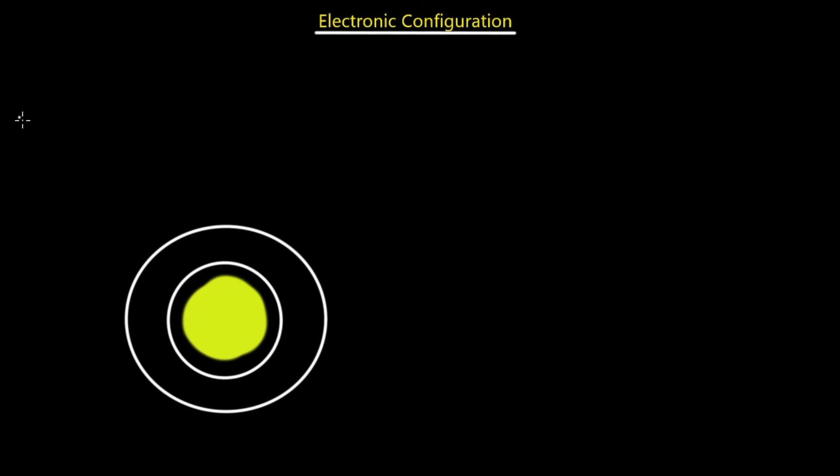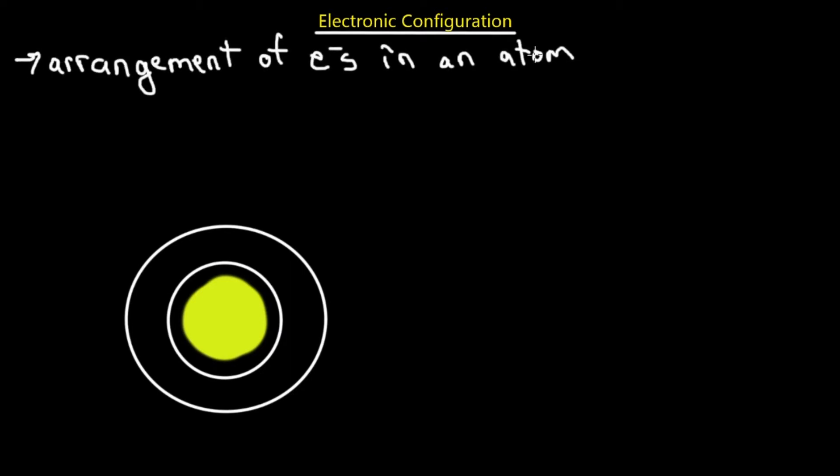The definition of electronic configuration is that it is an arrangement of electrons in an atom. In the previous video we talked about the atomic structure — atoms having a nucleus that contains protons and neutrons, and the electrons flowing around the nucleus in its shells or orbits. Now we're going to talk about the arrangement of those electrons, where they are positioned, and what implications that has on the atom.